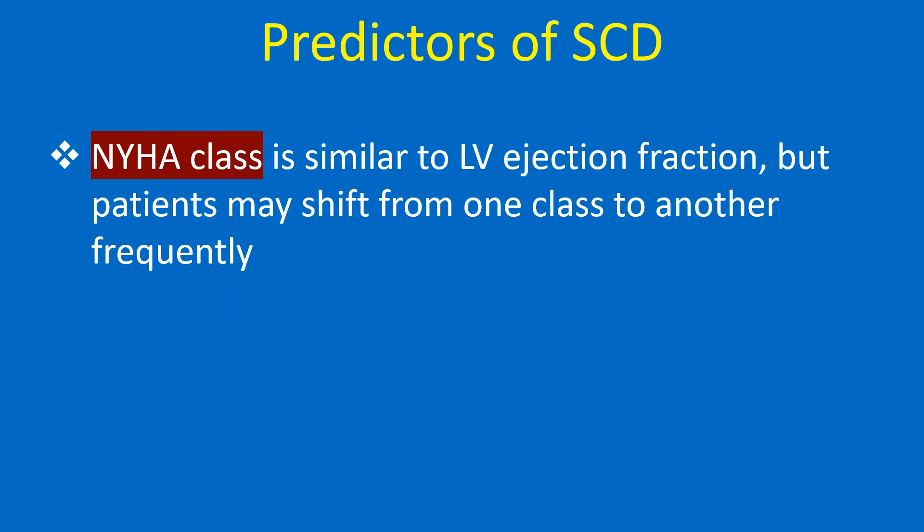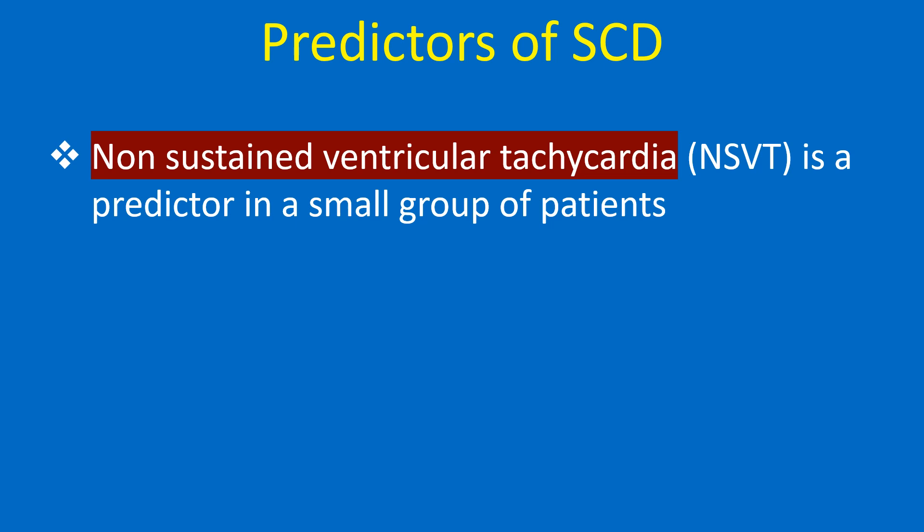NYHA class is similar to LV ejection fraction as a predictor, but patients may shift from one class to another frequently. Non-sustained ventricular tachycardia (NSVT) is a predictor in a small group of patients.